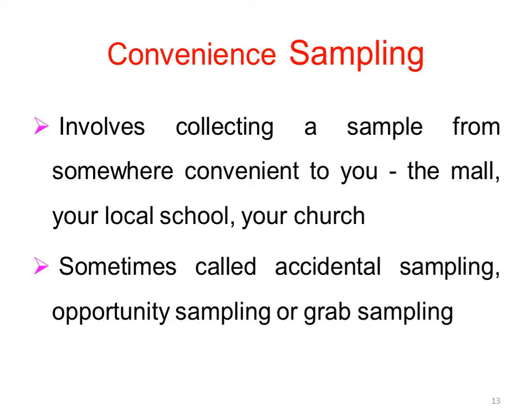Next is convenience sampling. In convenience sampling, you select samples that are easily accessible and available. For example, students and teachers in a class can be included as samples. Since you can collect data from those who are available, there are only opportunities, and most students can participate.